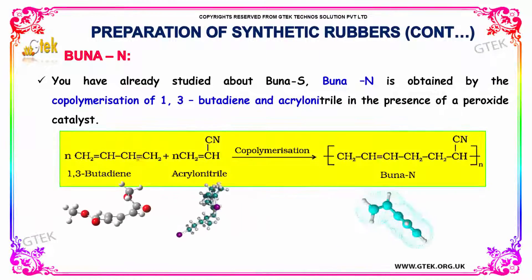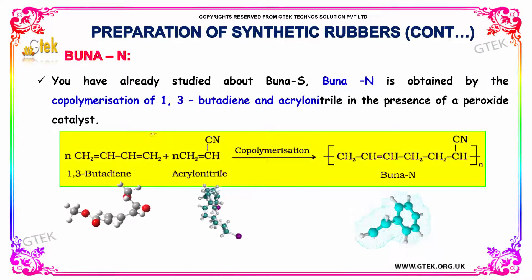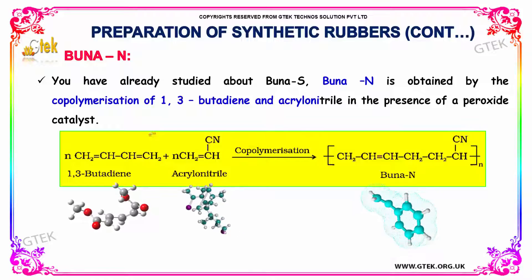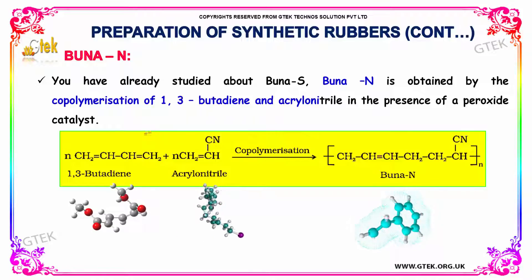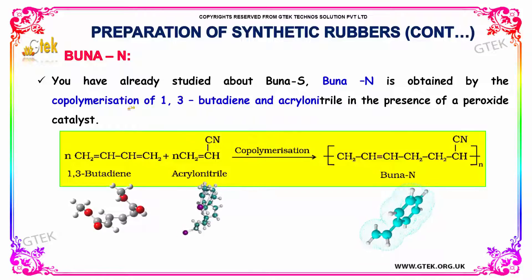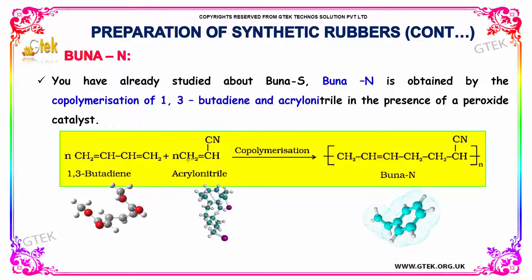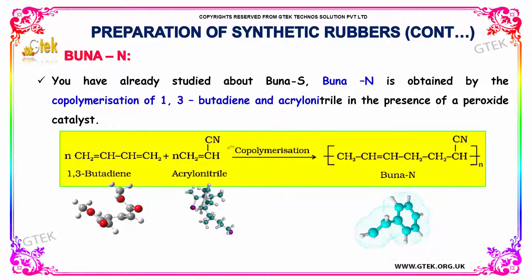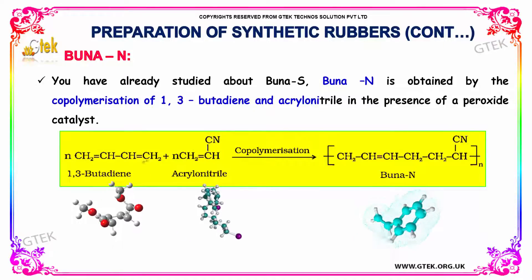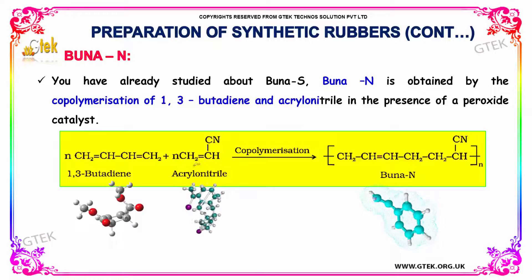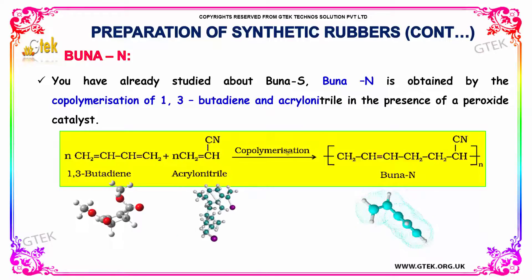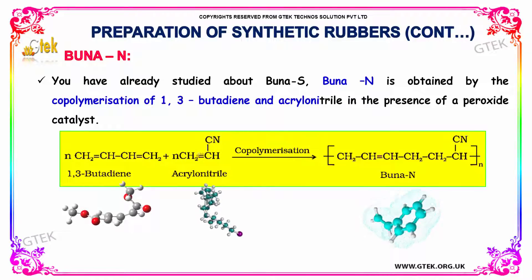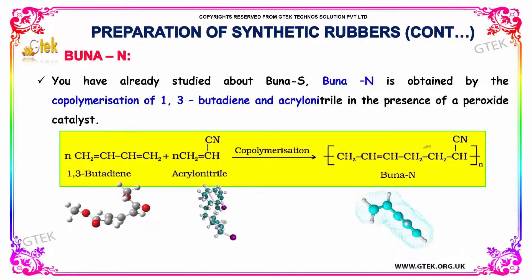Buna N is obtained by the copolymerization of 1,3-butadiene and acrylonitrile. Both reactants undergo copolymerization in the presence of a peroxide catalyst to form Buna N.